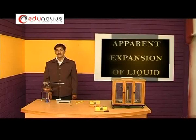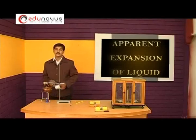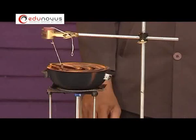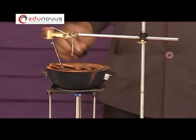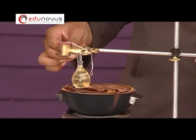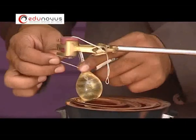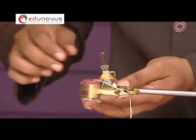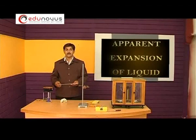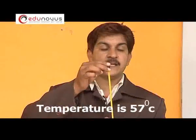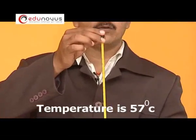Whenever the liquid in the bottle expands, we observe some part of the liquid will ooze out. Using a blotting paper, remove the liquid that has been expelled. After the oozing of liquid stops, remove the specific gravity bottle from the water bath and clean the surface of the bottle using blotting paper. Record the temperature of the water bath after oozing stops — the temperature is 57 degrees centigrade.